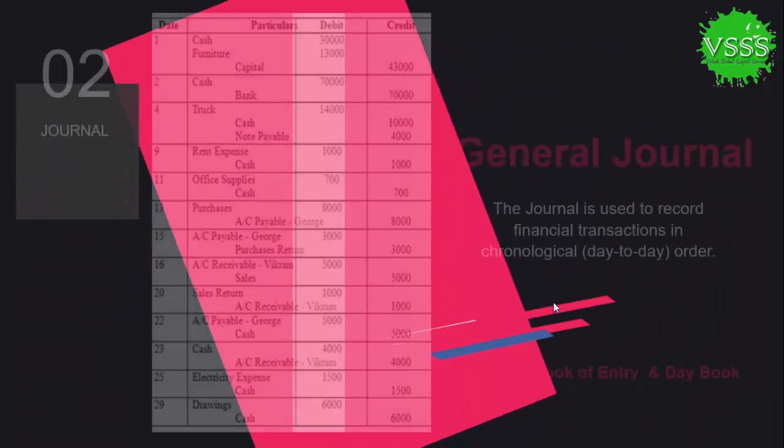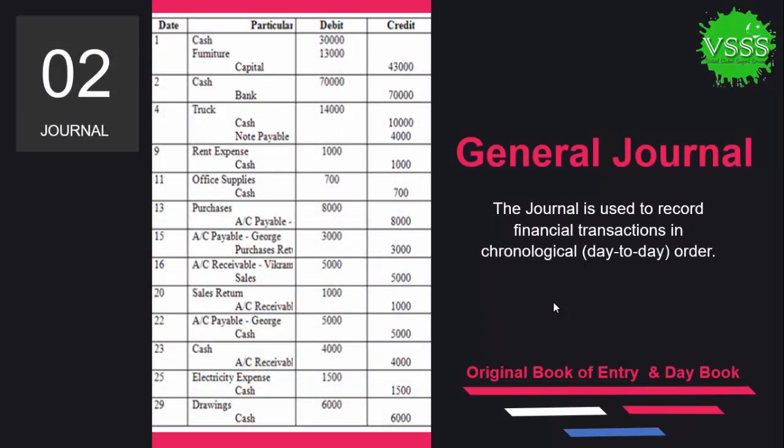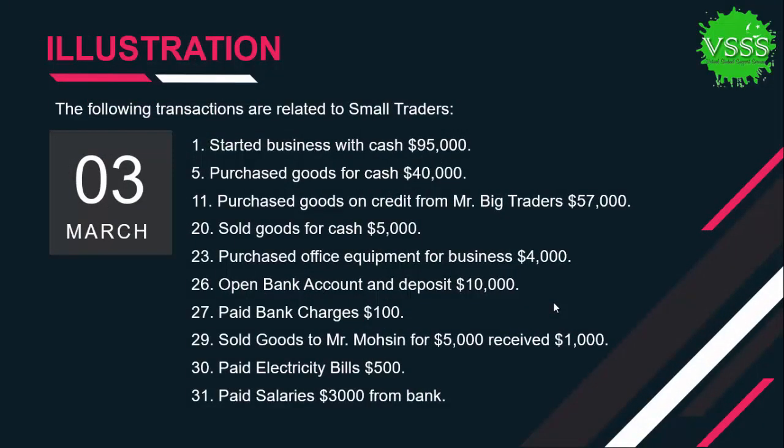The general journal is used to record financial transactions — the vouchers — in chronological (day-to-day) order. It is sometimes called the original book of entry or day book. We cannot record transactions in a disturbed order; for example, we cannot record a February 29th transaction first and then a 20th transaction second. Transactions must be recorded in proper chronological order.